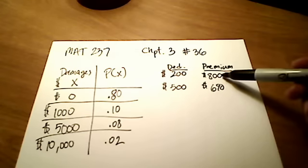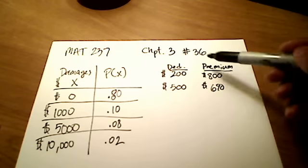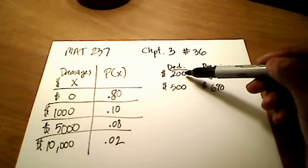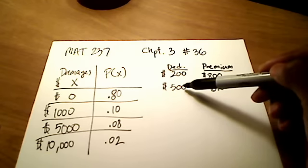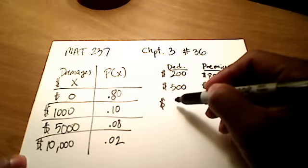So on top of the premium that you pay for the year, the premium is how much you give the insurance company per year just for having the policy. But if there's an accident, you, the user, has to pay out $200 or $500. Or I think they also had a deductible of $1,000.